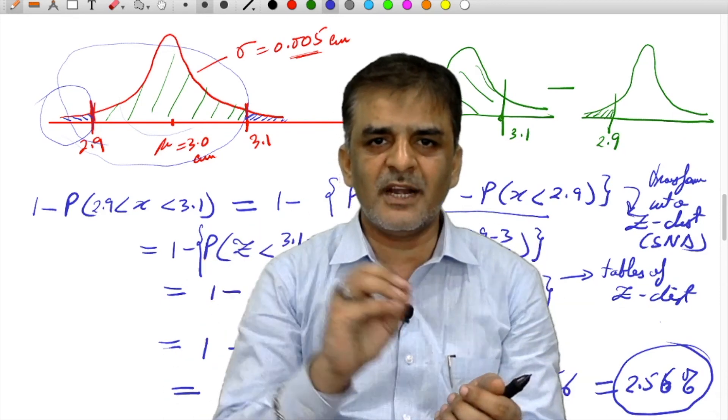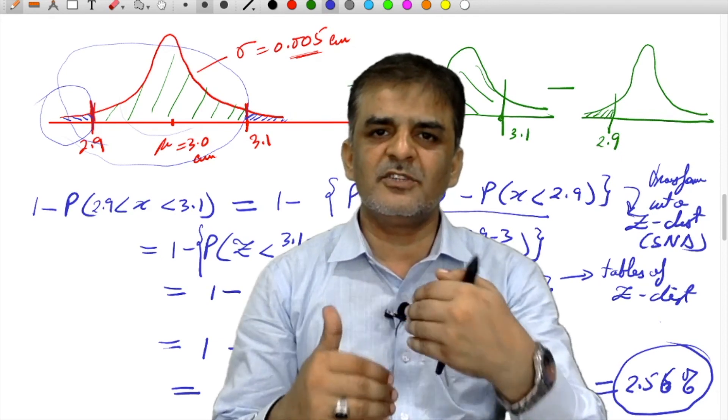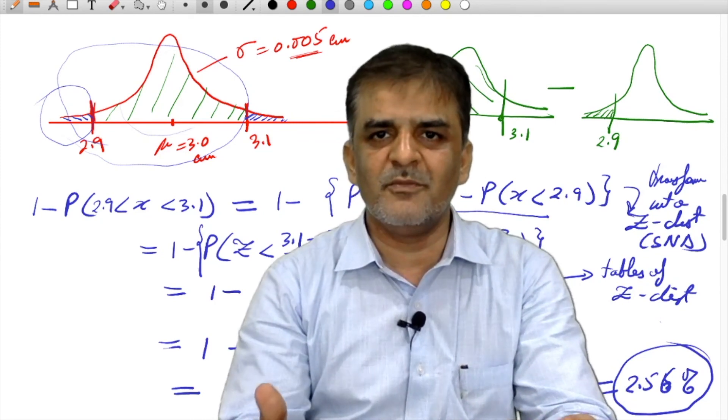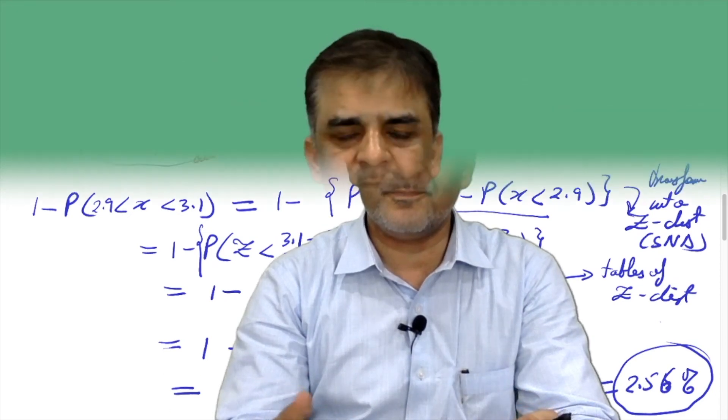The z distribution is a helping hand because one table covers all the possibilities. From that table we can pick up the values of cumulative probabilities, which are helpful to solve problems where the application of normal distribution is required. This was all about the basic procedures of normal distribution and their application.